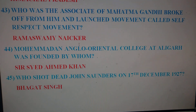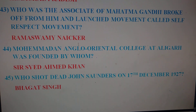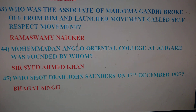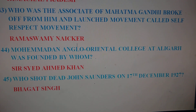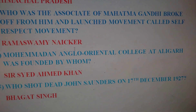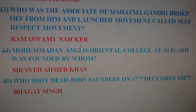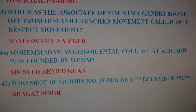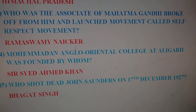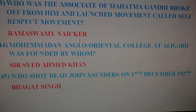Next question: who shot dead John Saunders on 17th December 1927? The answer is Bhagat Singh. Bhagat Singh shot John Saunders, who died on 17th December 1927.